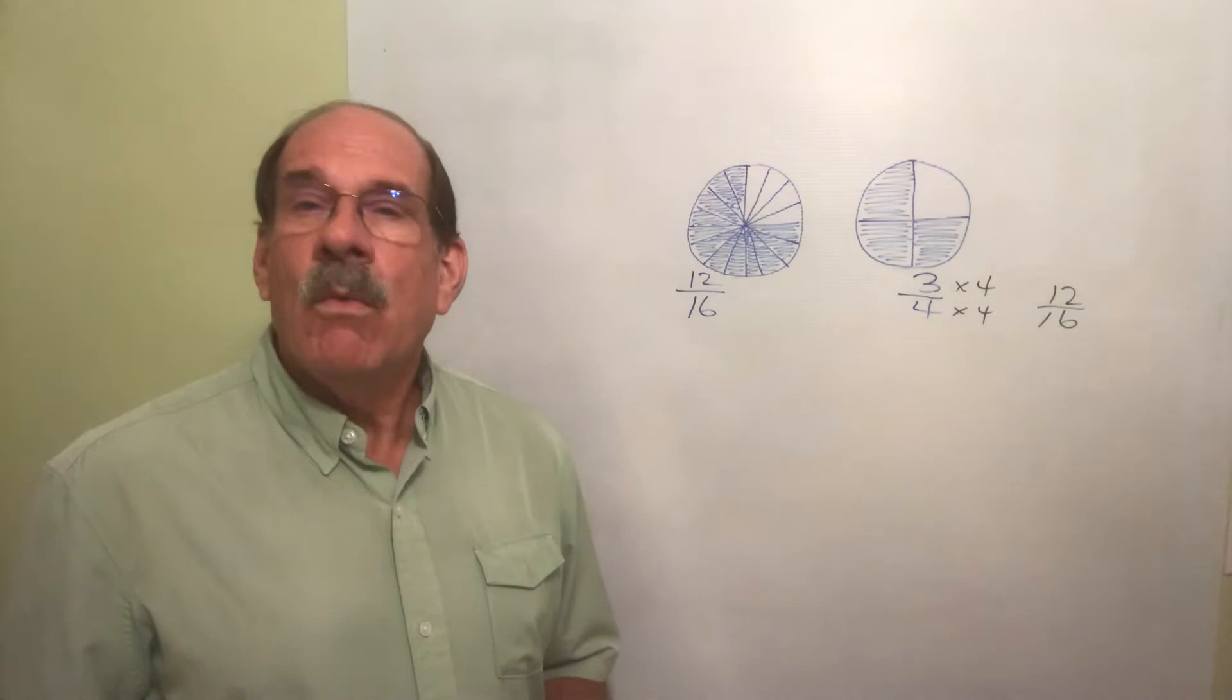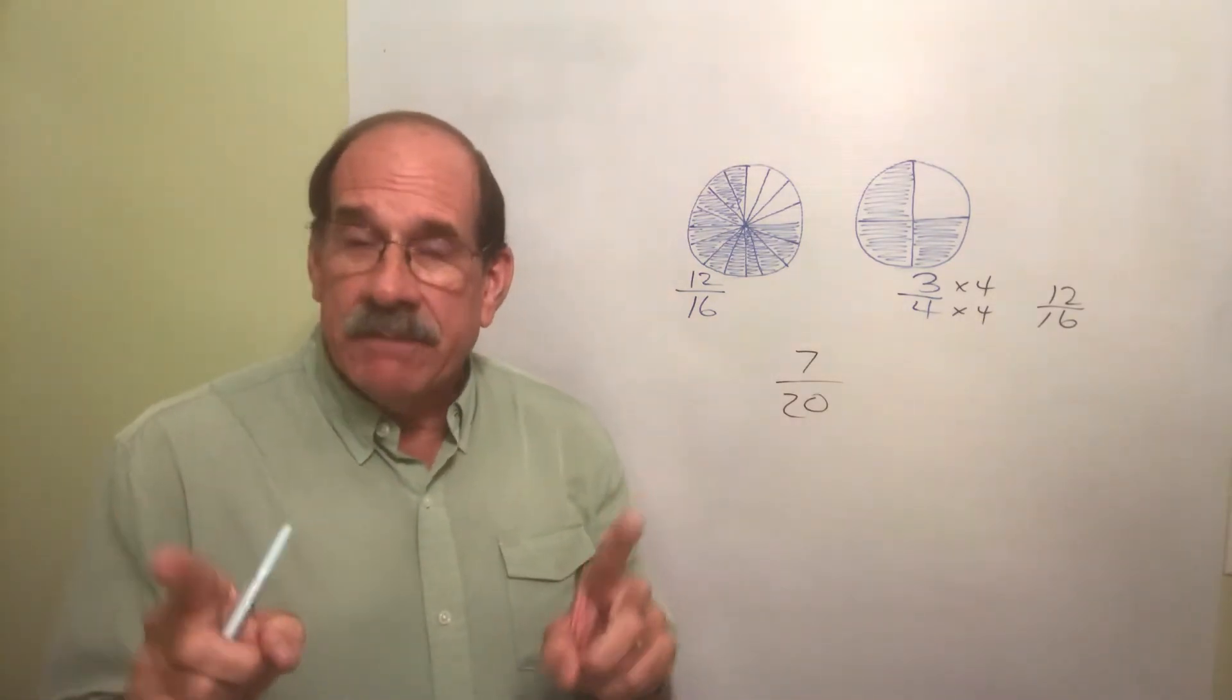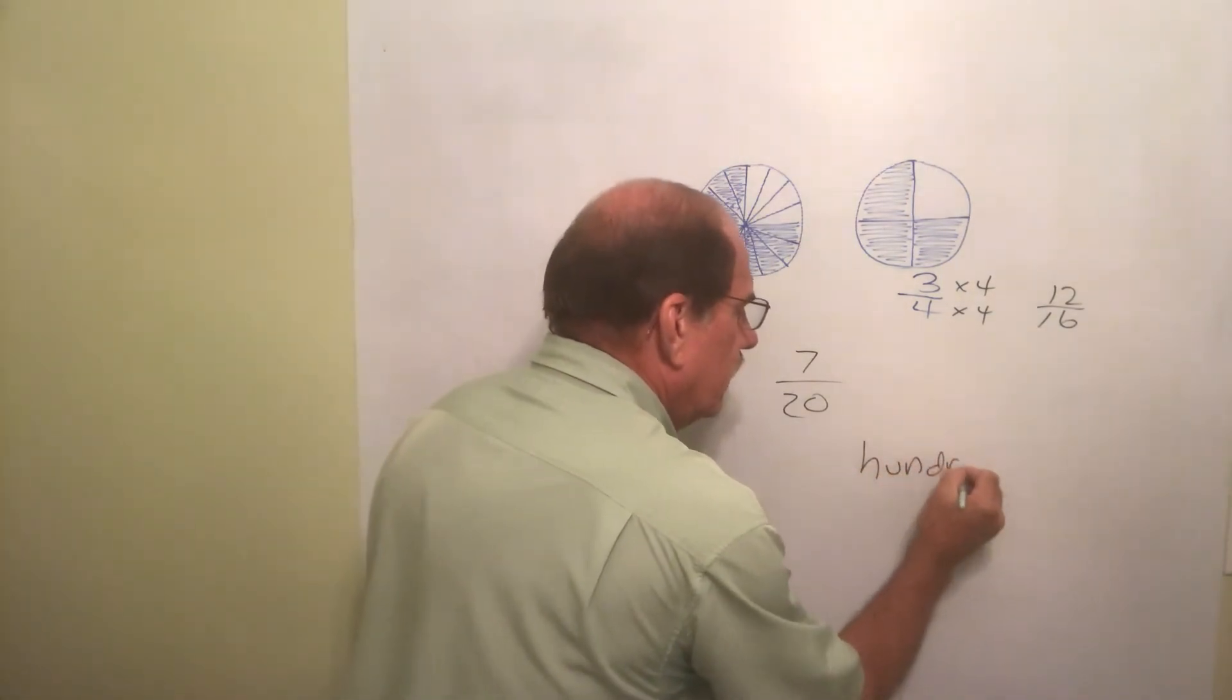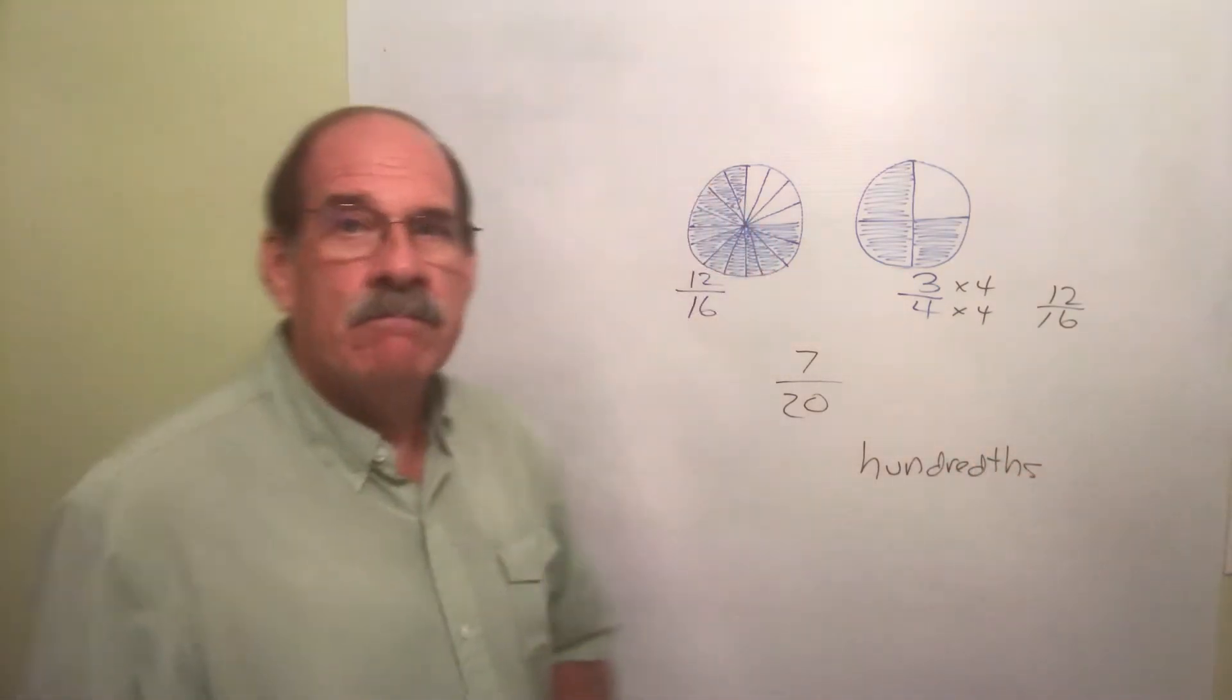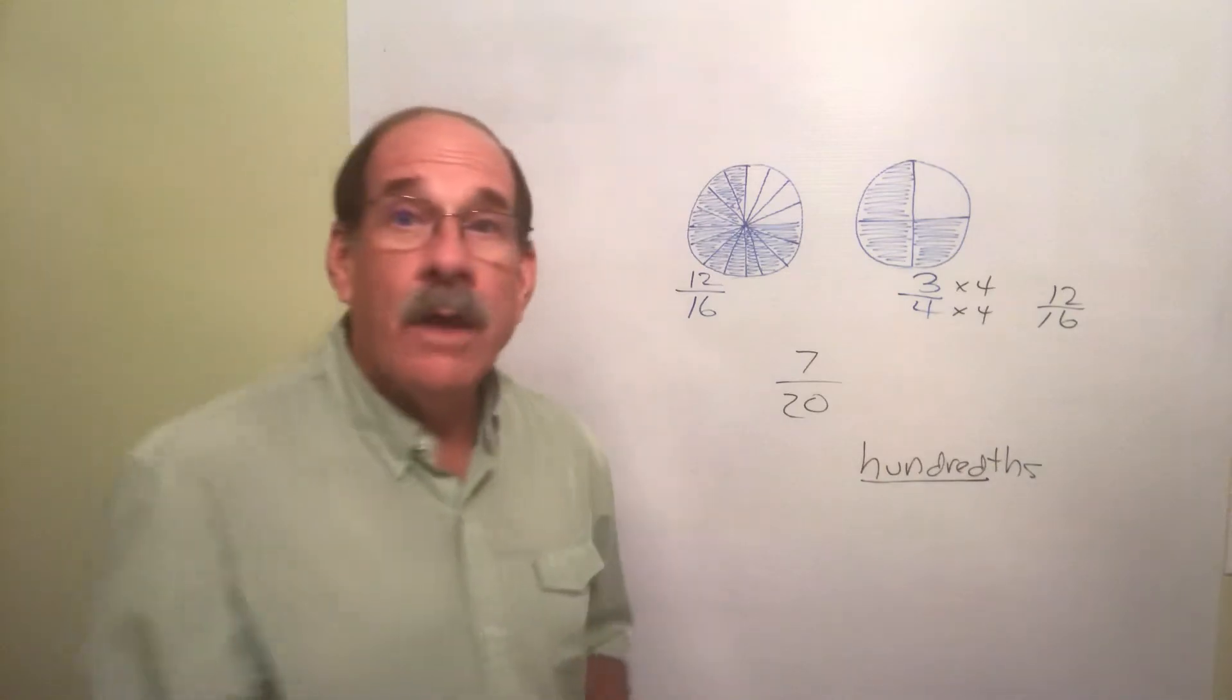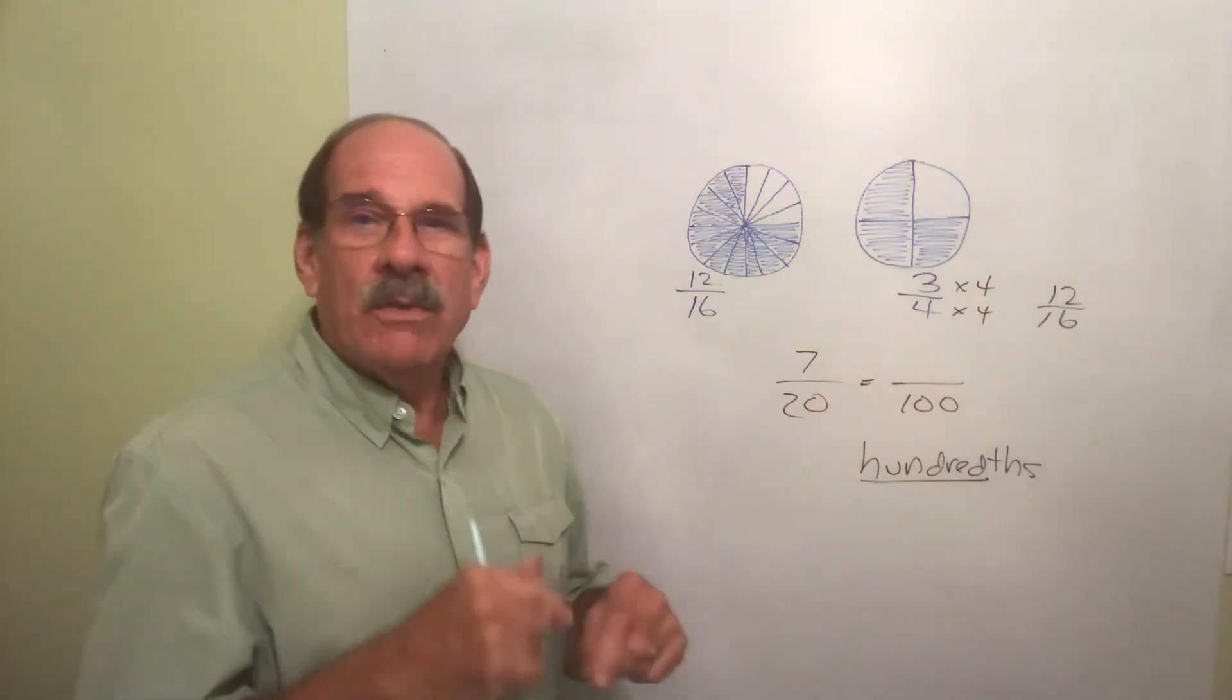What about something like seven twentieths? But I specify enlarge this into a fraction expressed in hundredths. Now if I say hundredths, that means I'm enlarging the fraction so the bottom number is the number 100. So what do I do to make the bottom number 100? Meaning what do I do to the number twenty to change it into one hundred?